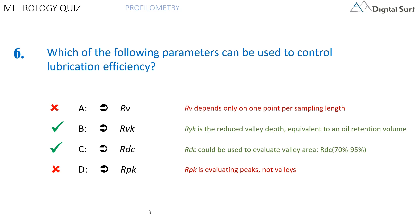The correct answers are B, RVK, and C, RDC. RVK is typically the recommended parameter for studying lubrication — it can be seen as an oil retention volume parameter, although it does not calculate a volume. RDC can also be used for lubrication if its attributes are configured correctly, for example with RDC between 80% and 95%, so it focuses on the bottom part of the profile. RV measures the height of valleys but takes into account only one point per sampling length, which may be a scratch, so it is not reliable for lubrication. RPK focuses on peaks, not valleys, so it is meaningless for lubrication.